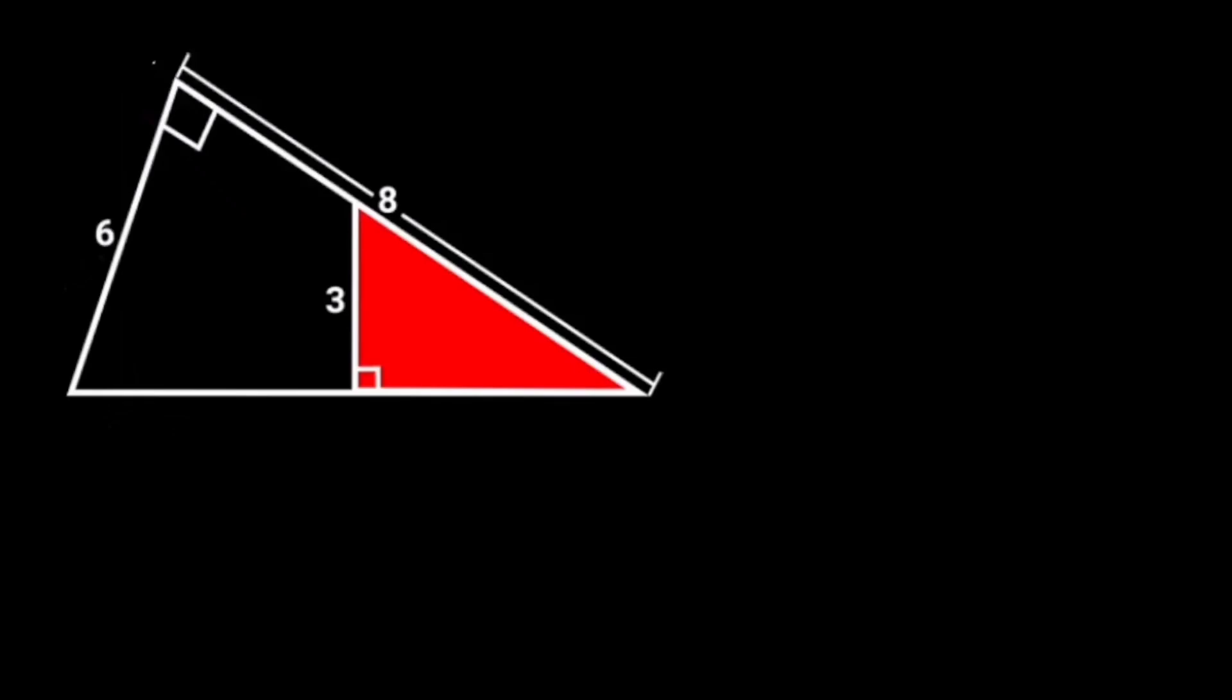In this figure, a smaller right triangle is inscribed in a bigger right triangle. If the bigger right triangle has its two sides as 6 and 8 units, and one side of the inscribed triangle is 3 units, find the area of the inscribed triangle.